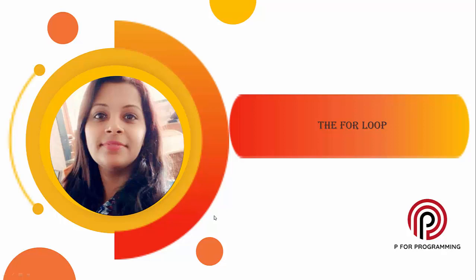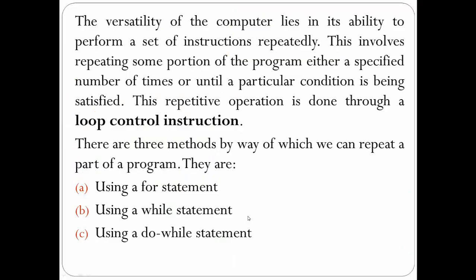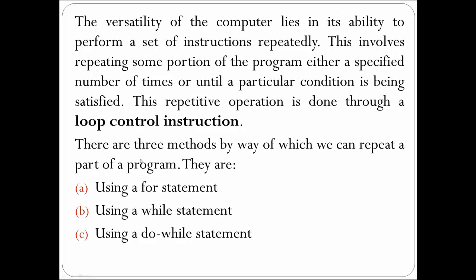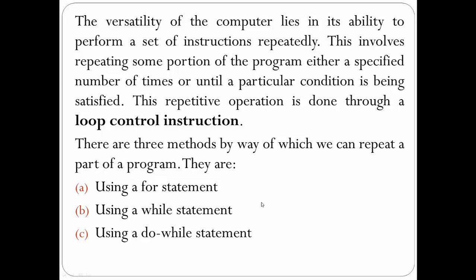In this lecture we are going to learn about the concept of loop control instruction and one of the types of loop called the for loop. The purpose of loop control instruction is that the versatility of the computer lies in its ability to perform a set of instructions repeatedly. This involves repeating some portion of the program either a specified number of times or until a particular condition is satisfied. This repetitive operation is done through a loop control instruction.